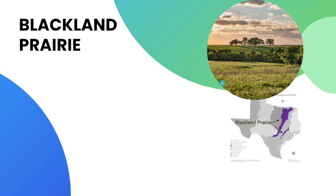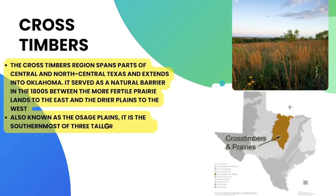Bordering the Blackland Prairie is the Cross Timbers region, which spans parts of central and north-central Texas and extends into Oklahoma. It served as a natural barrier in the 1800s between the more fertile prairie lands to the east and the drier prairies to the west. Also known as the Osage Plains, it is the southernmost of the three tall grass prairies.